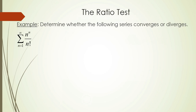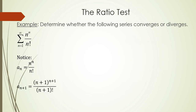Let's use the ratio test to determine whether the following series converges or diverges. We have the series from n equals 1 to infinity of n to the n over n factorial. Notice, a sub n is n to the n over n factorial, while a sub n plus 1 is n plus 1 to the n plus 1 power over n plus 1 factorial — I just replaced every n with n plus 1.